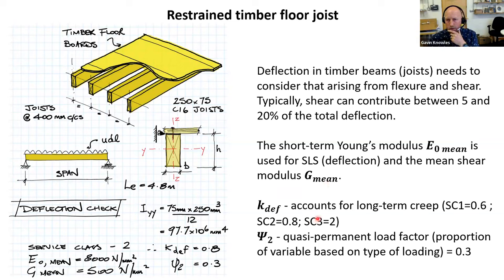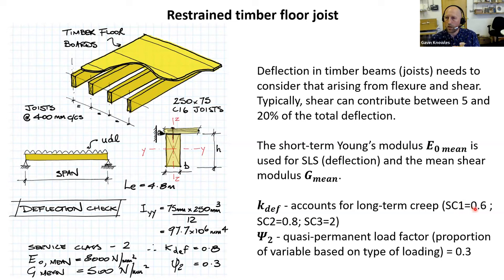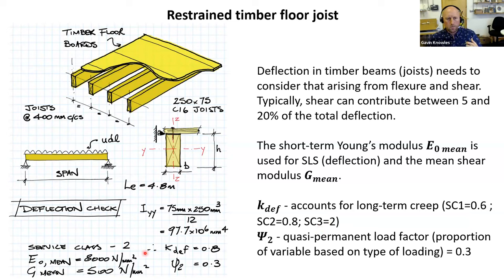K_DEF is the creep factor related to long-term deflection. For service class 1, K_DEF = 0.6 (multiplier on instantaneous deflection). For service class 3, K_DEF = 2.0 — so a wet timber in an exposed situation can deflect significantly more over time. Values of E_mean and G_mean come from BS EN 338 Table 1.